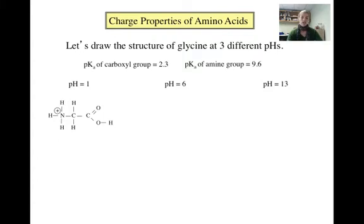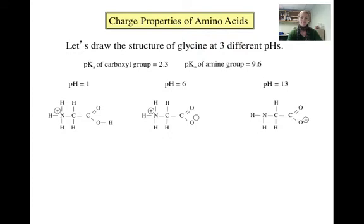At a pH of 6, the structure will change. The carboxyl group should be deprotonated because the pH is greater than its pKa, while the amine group should still be protonated because the pH is still less than its pKa. At a pH of 13, both the carboxyl and amine groups should be deprotonated because the pH is higher than both pKa values. At pH 1, glycine has a net charge of plus 1; at pH 6, a net charge of 0; and at pH 13, a net charge of minus 1.